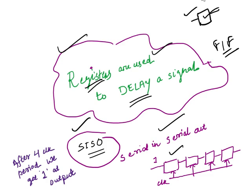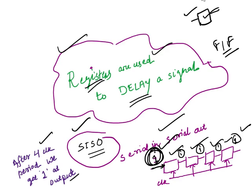Here I have four flip-flops — it can be three, two, or five, depending on the requirement. So with four flip-flops, this is the input. Let's say this is a one. After the first clock, I will get one here. After the second clock pulse, I will get one here. After the third clock pulse, I will get one here. After the fourth clock pulse, I will get this one at the output. So it will take four clock periods to get the same input at the output, meaning we are simply delaying the signal.